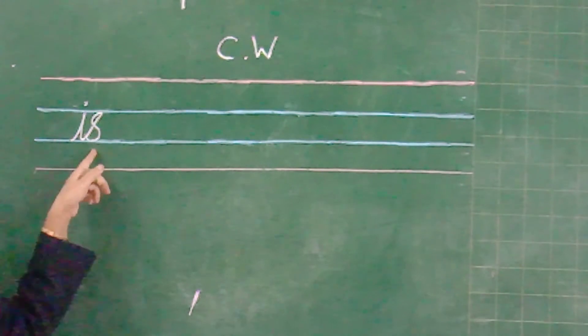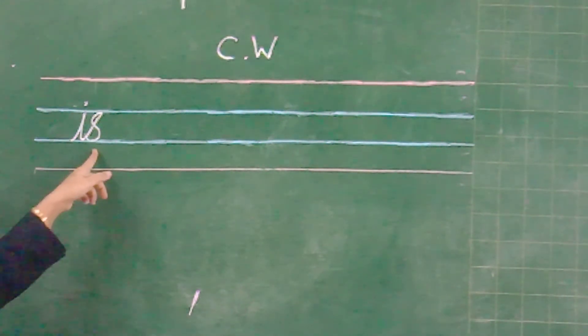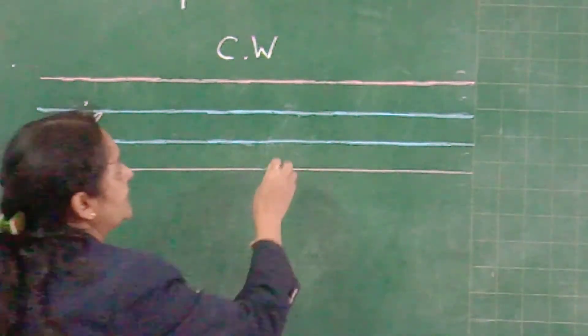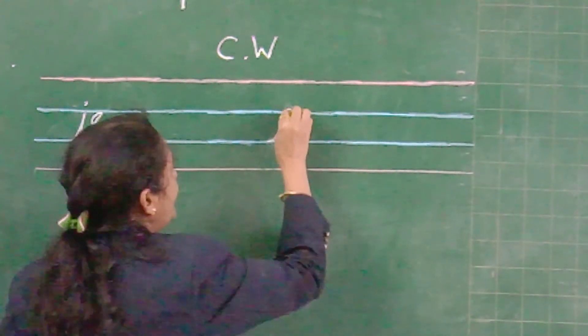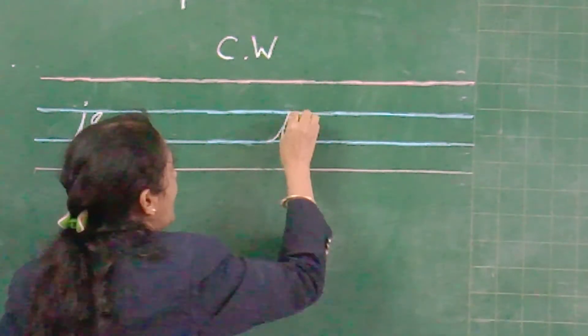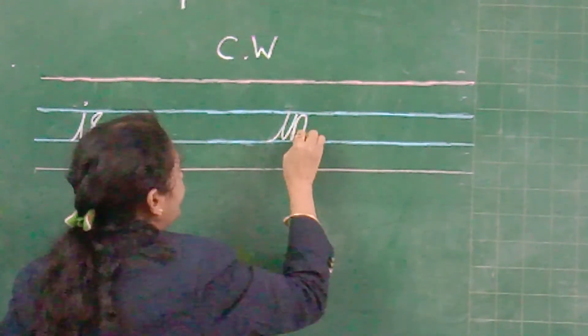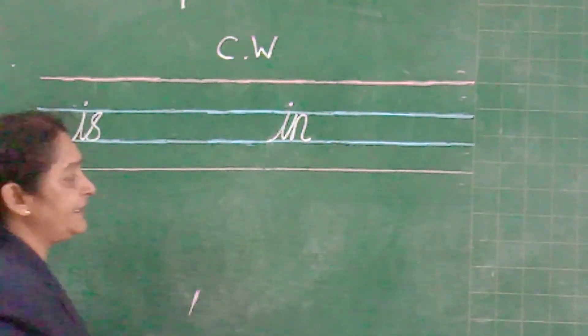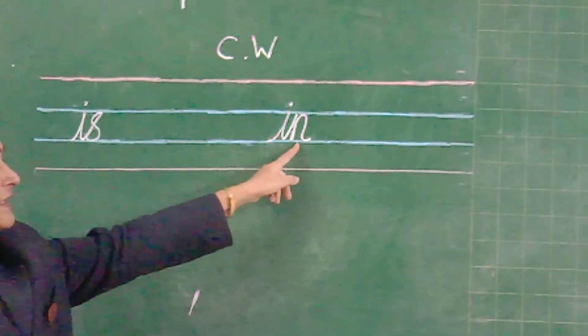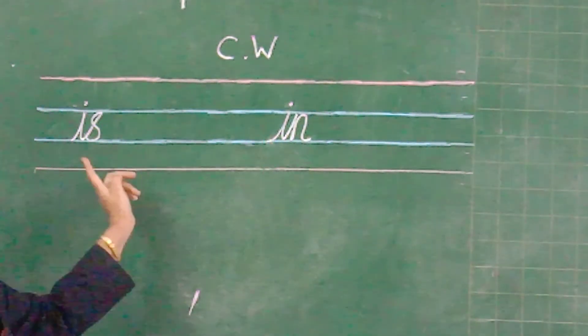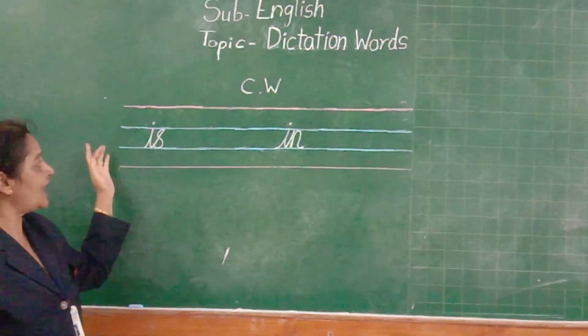I-S. I-S. Now next word is I-N. I-N. Write these 2 words in your notebook.